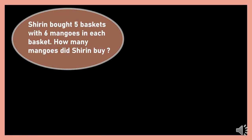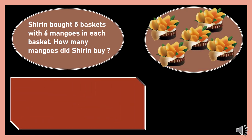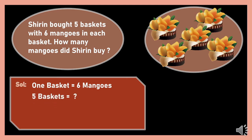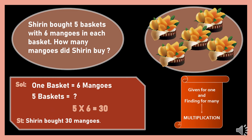Let's see this question and decide the operation correctly. There were 5 baskets with 6 bagels in each basket. How many bagels were there altogether? What's given: 1 basket has 6 bagels. In 5 baskets, how many bagels? Given for one, finding for many — so multiplication. 5 sixes are 30. There were 30 bagels altogether.